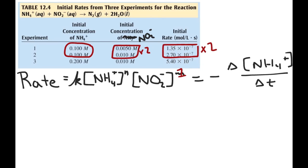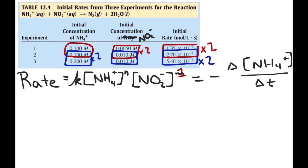If we look at experiments two and three, we see that there is no change in the nitrite concentration, but we have a doubling of the initial concentration of ammonium used. We see that from experiment two to experiment three, where we doubled the ammonium concentration, we get a doubling of the rate of the reaction from 2.7 times 10 to the negative 7th to 5.40 times 10 to the negative 7th. That means that for this reaction, it is also first order with respect to ammonium.